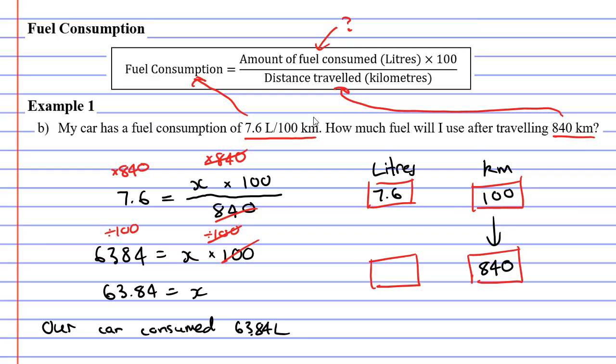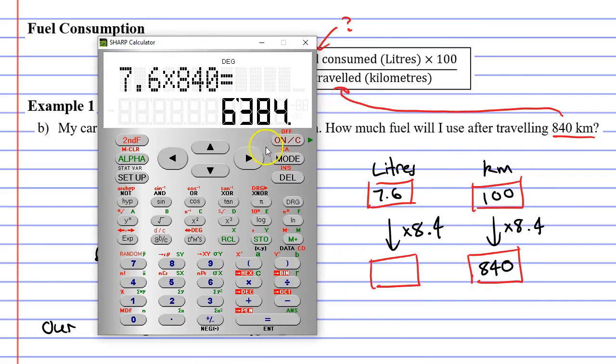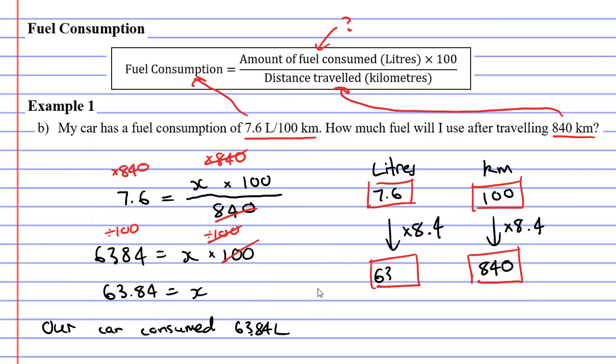So what would we do to get from 100 to 840? Well that's quite simple. We would just multiply by 8.4. 100 times 8.4 is 840. So what's 7.6 litres times 8.4? Let's do that on the calculator. 7.6 times 8.4 equals, and we get our 63.84.